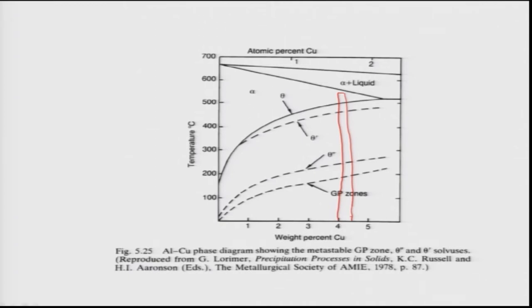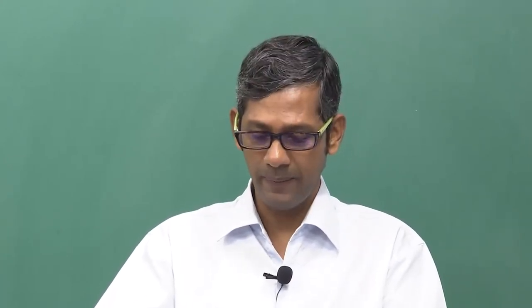Quenching causes a rapid change in temperature, retaining all copper atoms in the aluminum microstructure. The next step, aging, involves heating the alloy to a temperature between 150 to 200 degrees Celsius.